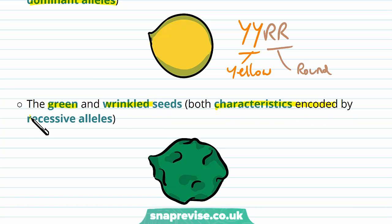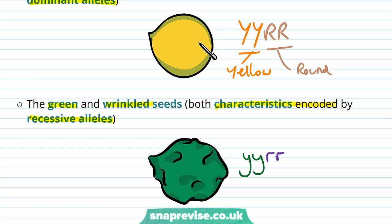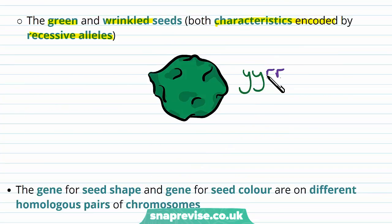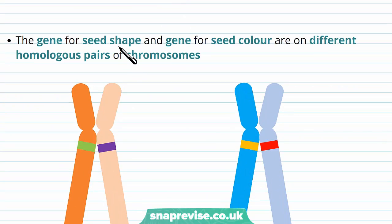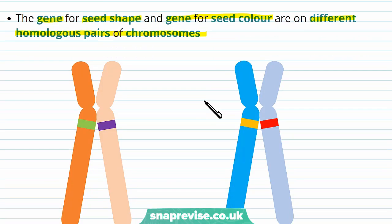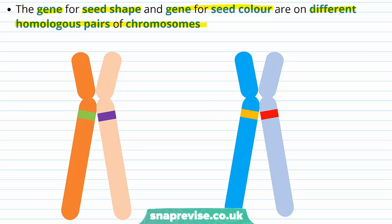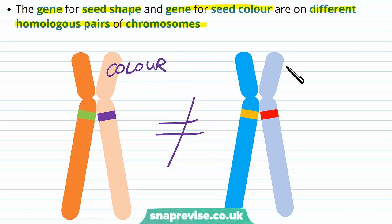The other pure-breeding seed was purely green and wrinkled, both characteristics encoded by recessive alleles — lowercase y, lowercase y, lowercase r, lowercase r. This works because the gene for seed shape and the gene for seed colour are on different homologous pairs of chromosomes. Any one of the two alleles for seed colour can combine with any one of the two alleles for seed shape, so offspring can inherit yellow and round, yellow and wrinkled, green and round, or green and wrinkled.